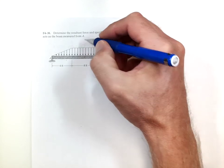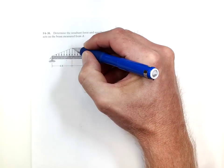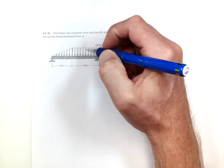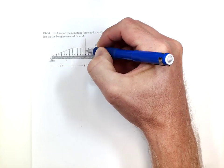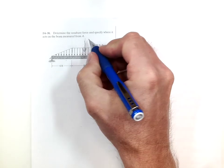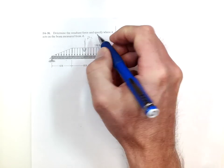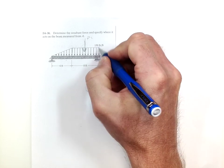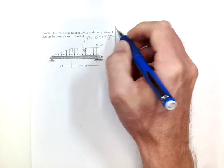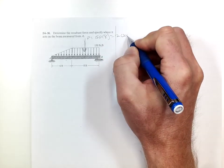first we're going to add up the load and break this into two loads, one being a rectangle and one being a triangle. The rectangle acts at the centroid of that rectangle, and that load would be the maximum load times the width, and that equals 1,200 pounds.